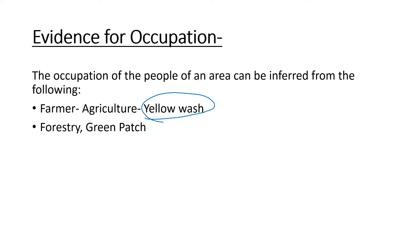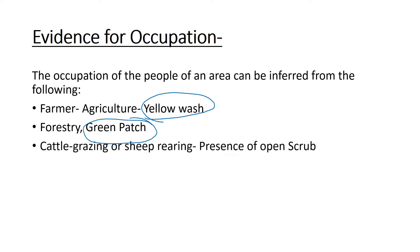Forestry — people are engaged in forestry if you see some green patch around that area. Cattle grazing — you can write this when you can see the presence of open scrub.